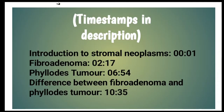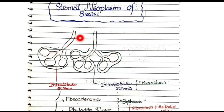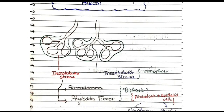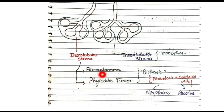In this video we will discuss fibroadenoma and phyllodes tumor, which are the stromal neoplasms of the breast. Looking at this simplified diagram of the breast, we can see the ducts and terminal ducts opening into acini. Together, the terminal duct and its associated acini are referred to as a lobule. The stroma inside a lobule is called intralobular stroma, and the stroma between multiple lobules is called interlobular stroma. Fibroadenoma and phyllodes tumor arise from the intralobular stroma, not the interlobular stroma.